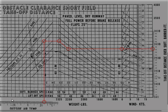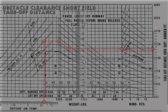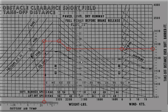To calculate the takeoff distance, we bring this vertical scale over our desired takeoff weight of 2130 pounds. Next, we move the start of the plotting line to the 10 degrees Celsius mark, then bring the line up to a pressure altitude of 1000 feet.